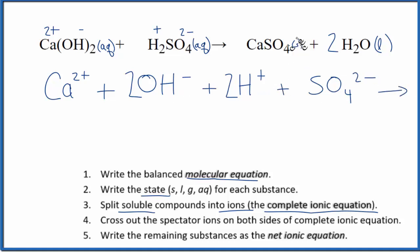Let's write the products. Because this has a solid after it, it's not split up, we just write CaSO4. And we can put a little S after that to help ourselves remember that since it's a solid, we don't break it apart. Plus, H2O, that's a liquid, we're not going to break that apart either. Put a little L after it, and we have 2 of them. Put a 2 there. So this is the complete ionic equation.